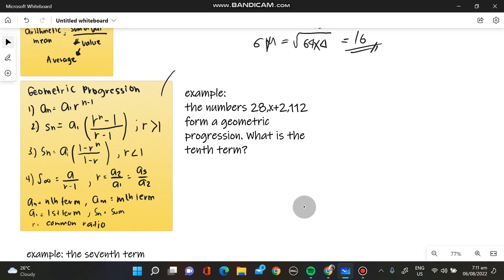We can just take note in this one. And then, these are the values. A sub n, n term, A sub 1 first term, R is the common ratio, A M is the M term, and S N is the sum.